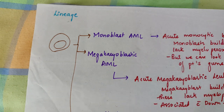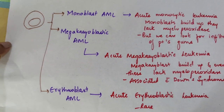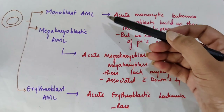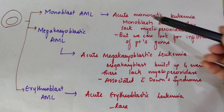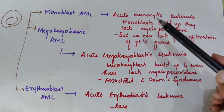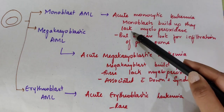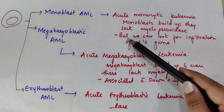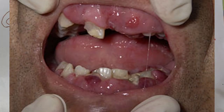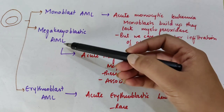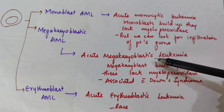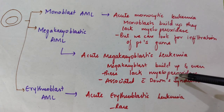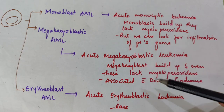In the lineage classification, Monoblastic AML — Acute Monocytic Leukemia — involves a buildup of monoblasts, which lack myeloperoxidase. A key finding is gum infiltration, visible as infiltrates in the patient's gums. Megakaryoblastic AML — Acute Megakaryoblastic Leukemia — also lacks myeloperoxidase and is most commonly associated with Down syndrome.